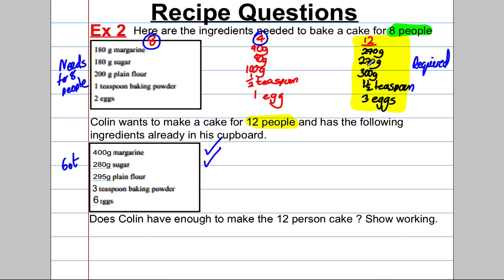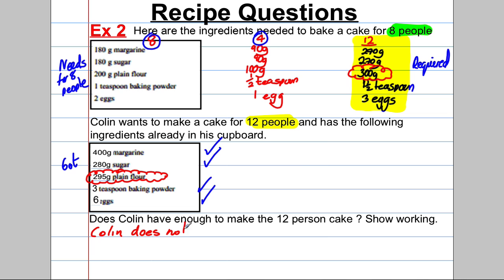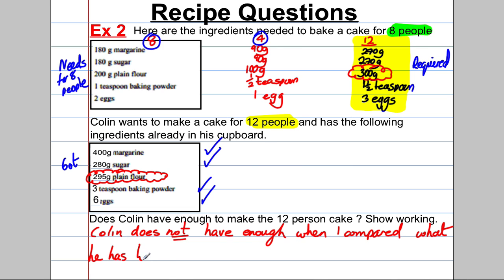He has three teaspoons — more than the one and a half required, so that's fine. He has six eggs — more than three, also fine. But he has 295 grams of plain flour and needs 300 grams, so he is five grams short. He does not have enough. You must state your answer: Colin does not have enough, and say what's short — he is five grams short of plain flour.